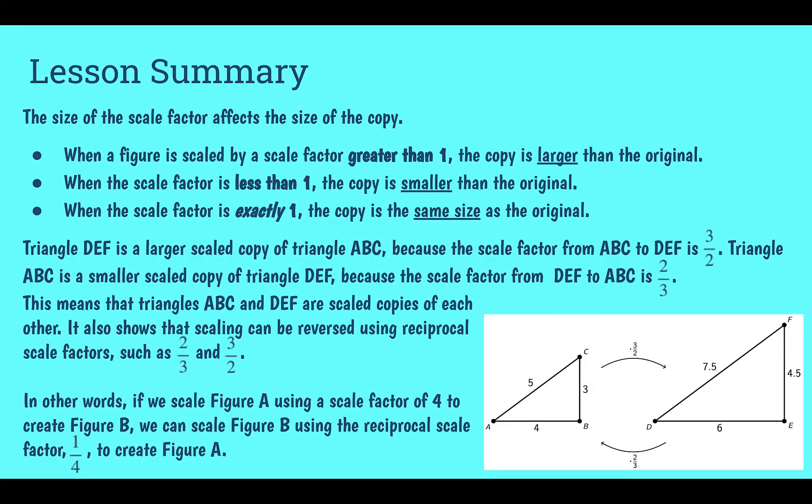In this lesson, we learned that the size of the scale factor affects the size of our scale copy. If our scale factor is larger than 1, the copy is larger than the original. If the scale factor is less than 1, it's smaller than the original. And if the scale factor is exactly 1, it's the same size as the original. We also learned that going forward and backward, the scale factors are reciprocals of each other. Here we have a triangle. Going from left to right, we had to multiply by 3 over 2. Going from right to left, larger to smaller, we had to multiply by 2 thirds. They are reciprocals.